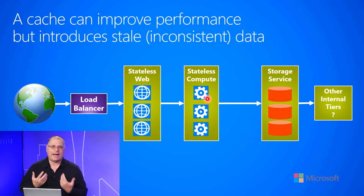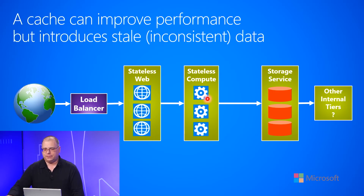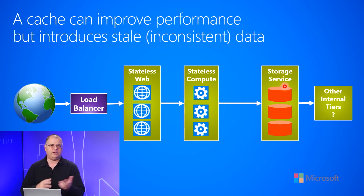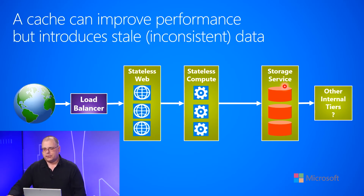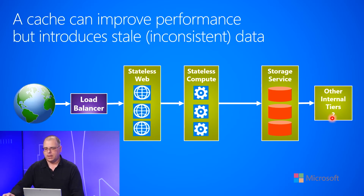...we're going to go and grab some state and then do some processing based on the request that came in from the customer. The state is typically stored in some kind of storage service — this could be a SQL database or a NoSQL database, and there are literally hundreds to choose from. Sometimes these storage services are implemented as multiple tiers themselves, so there may be other internal tiers and additional network hops that you don't know about as part of their internal implementation.